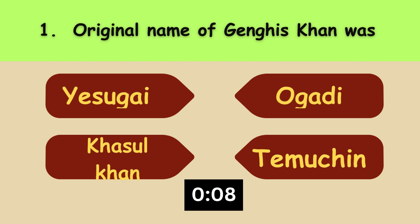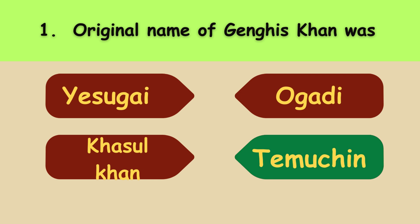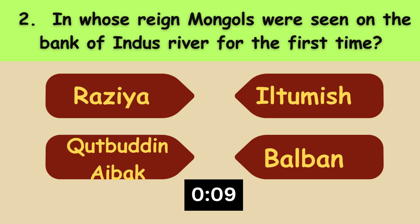The original name of Genghis Khan was Temu Chen. In whose reign were Mongols seen on the bank of the Indus river for the first time? The answer is Iltutmish.